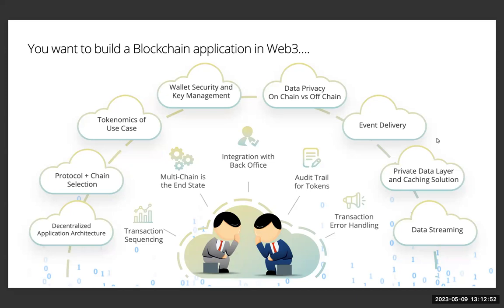Transaction sequence is key to maintaining the integrity of your application, ensuring that transactions are executed in the correct order, preserving consistency and safeguarding against potential conflicts. Data privacy is a delicate balancing act. Flexibility in choosing between on-chain and off-chain storage is essential for ensuring data privacy while maintaining the integrity and performance of your application.